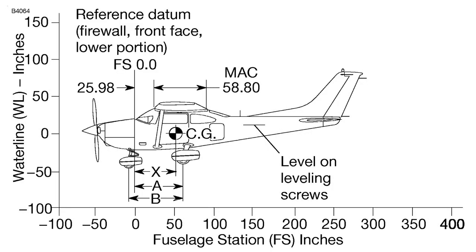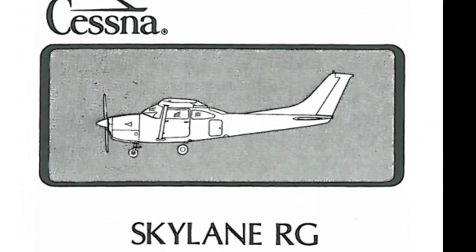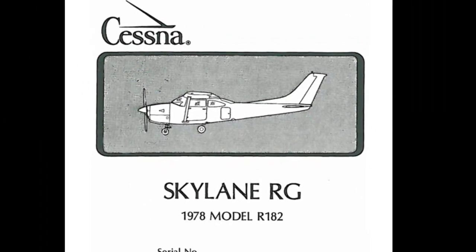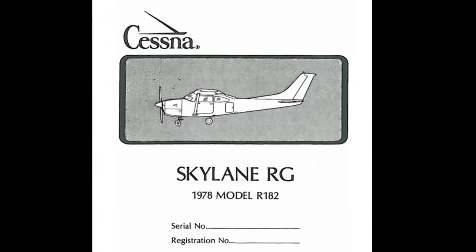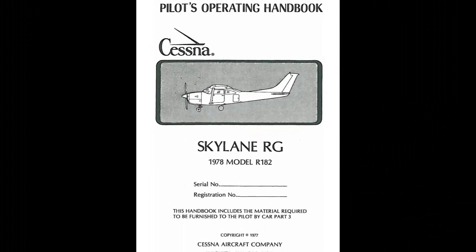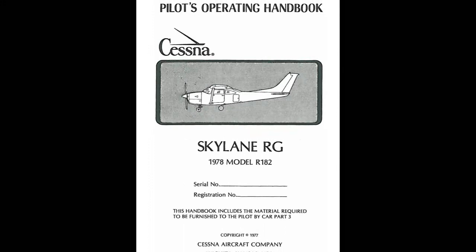Welcome back to the FSX404 channel. Today I'm going to do an actual weight and balance calculation. This tutorial will be a bit longer and will have more parts, including planning a flight. The first thing I want to do is the weight and balance for a Cessna 182 RG. To do a proper weight and balance for an airplane, we have to go to its Pilot Operating Handbook, or POH — and for older airplanes, sometimes they're called information manuals. Today we're going to use a Skylane RG, the 1978 model R182 — that's the retractable gear Cessna 182.